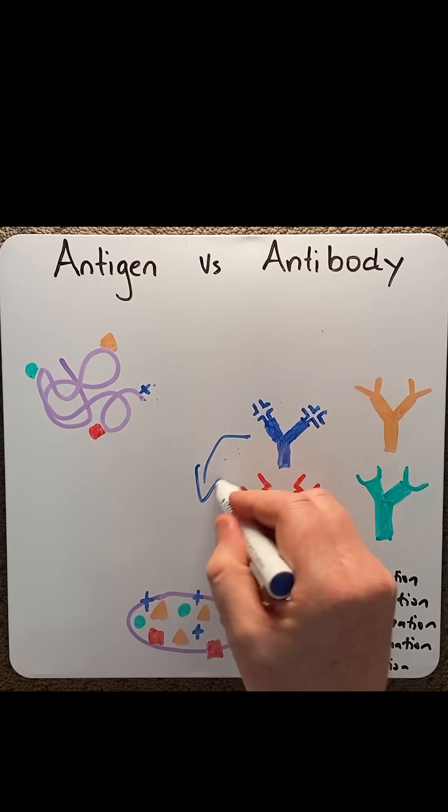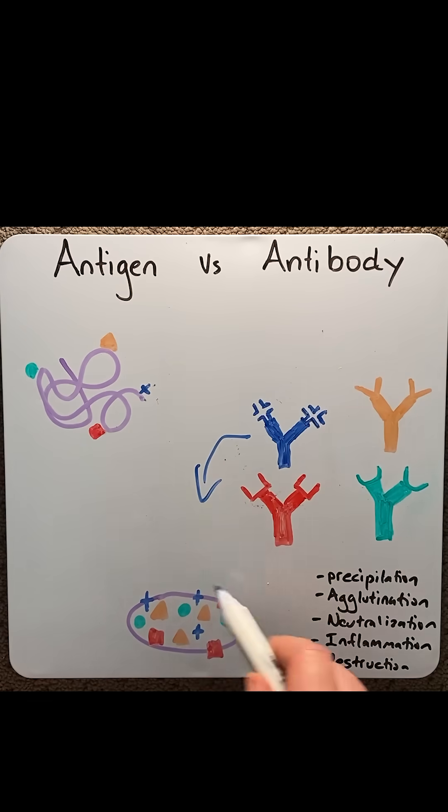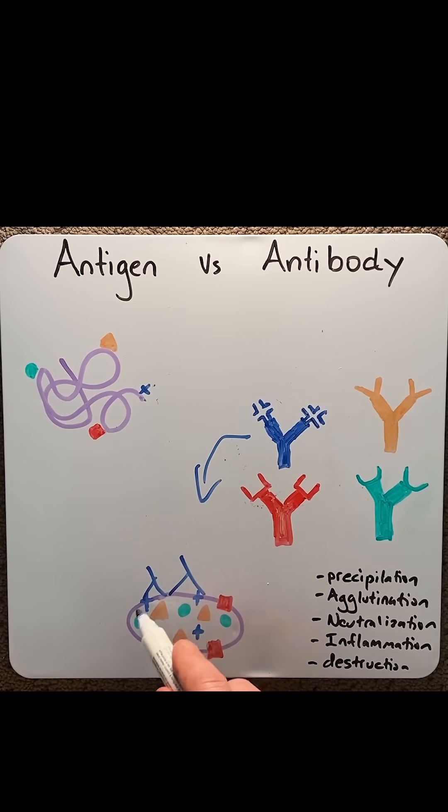When an antibody recognizes a foreign antigen and binds to the epitopes, as you can see down here, there are a number of things that the antibody response will cause. Number one: